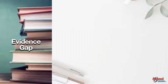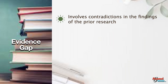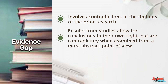Evidence gap arises if a new research finding contradicts widely accepted conclusions. This involves contradictions in the findings of prior research. Such a gap occurs if results from studies allow for conclusions in their own right but are contradictory when examined from a more abstract point of view.